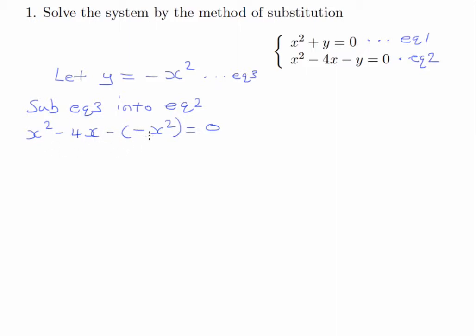So this is positive x squared, so that gives us 2x squared minus 4x is equal to 0.